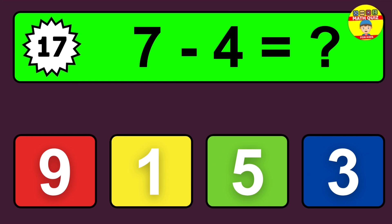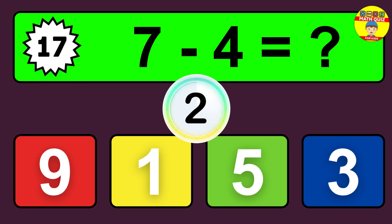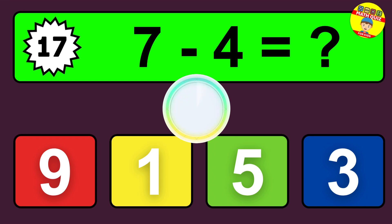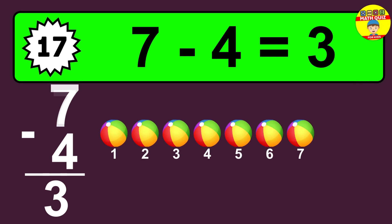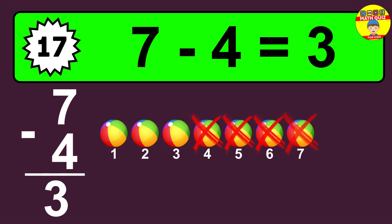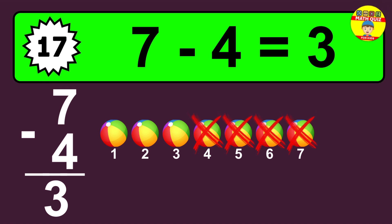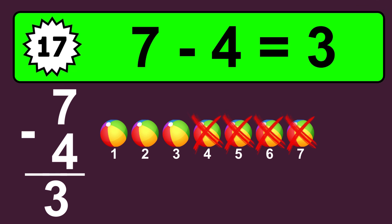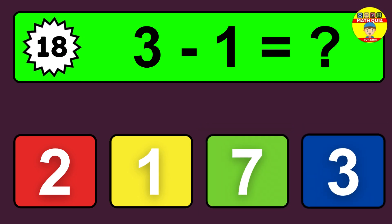Question 17. 7 minus 4 equals what? So the answer is 7 minus 4 is 3. Let's count it. 1, 2, 3.